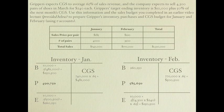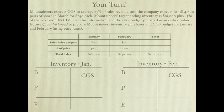Now try a similar problem with Mountaineers. Mountaineers expects cost of goods sold to average 75 percent of sales revenue, and expects to sell 4,600 pairs of shoes in March for $240 each. Target ending inventory is $18,000 plus 45 percent of the next month's cost of goods sold. Prepare Mountaineers' inventory purchases and cost of goods sold budget for January and February using either T-accounts or the form from the prior slide. Press pause now, try it on your own, then come back.